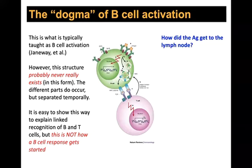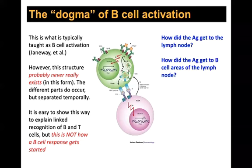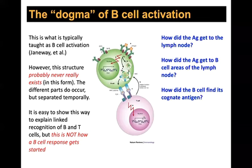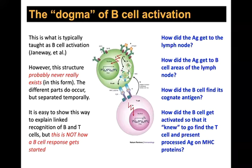The questions we'll cover today: How does antigen get to the lymph node? How does antigen get to the B cell zones of the lymph node? How does the B cell enter the lymph node and search for its antigen? And once the B cell finds its cognate antigen, how does it get activated so it knows to find a T cell and present processed antigen on MHC class II for full activation signals?